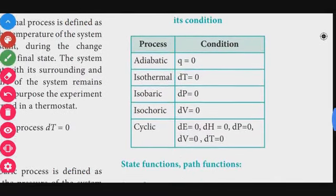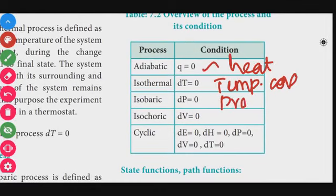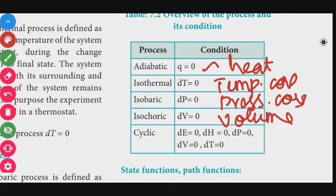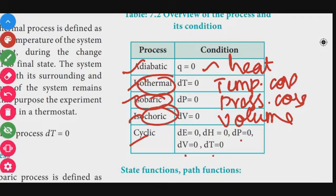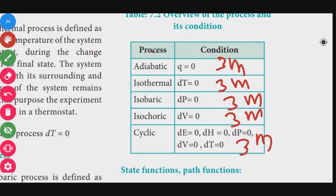Summary of processes: adiabatic — q = 0, no exchange of heat; isothermal — temperature is constant; isobaric — pressure is constant; isochoric — delta V = 0, volume is constant; cyclic — internal energy, enthalpy, pressure, volume, and temperature all remain constant. Remember: thermal = temperature, baric = pressure, choric = volume. Each process can be a separate 3-mark question, and combined they may form a 5-mark question.